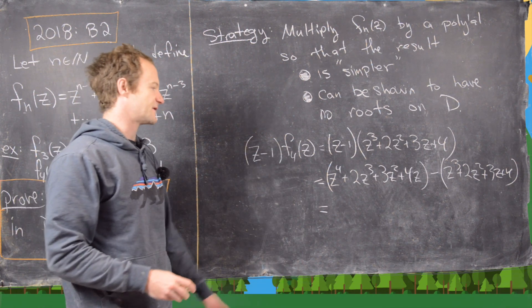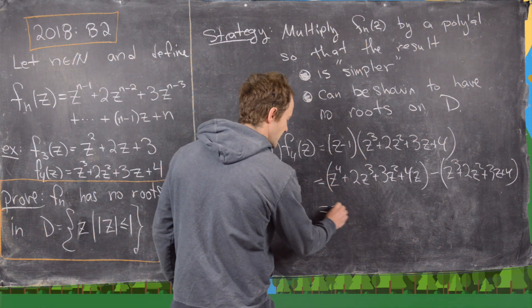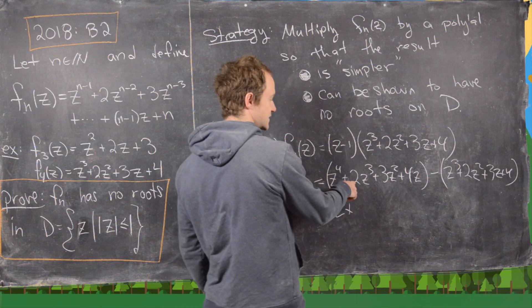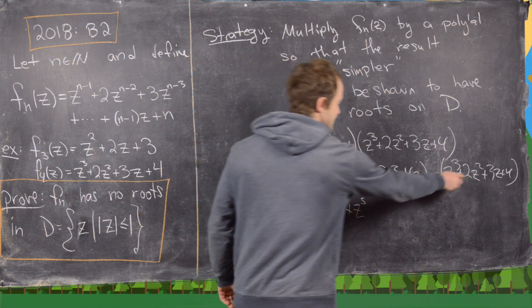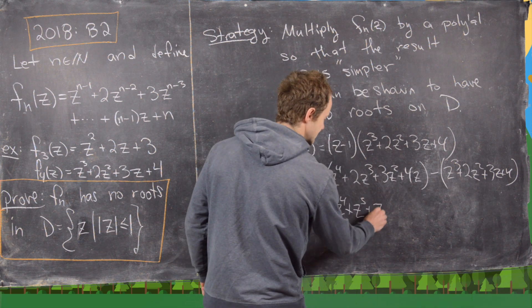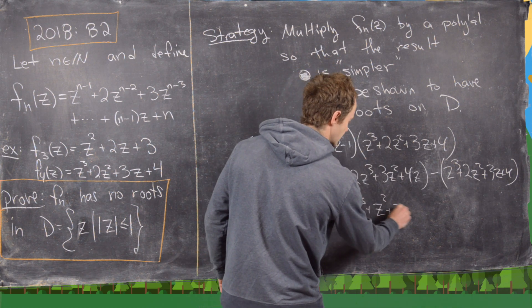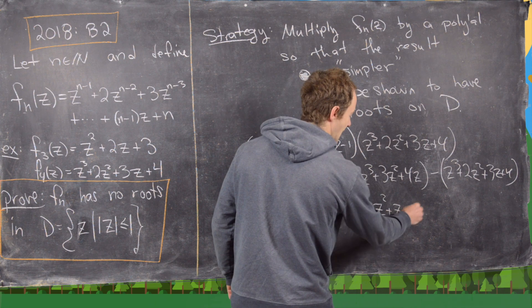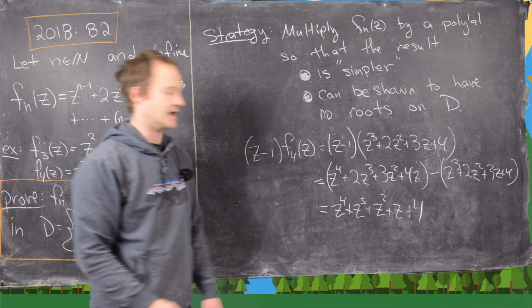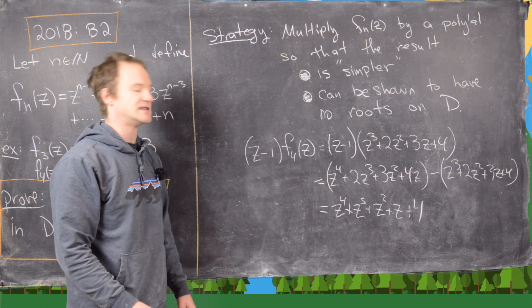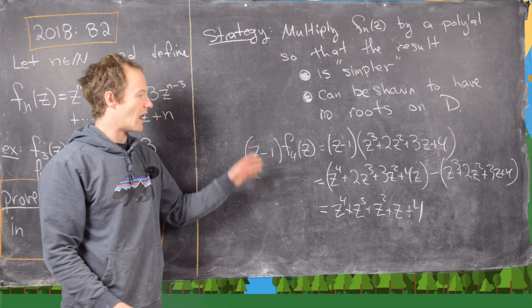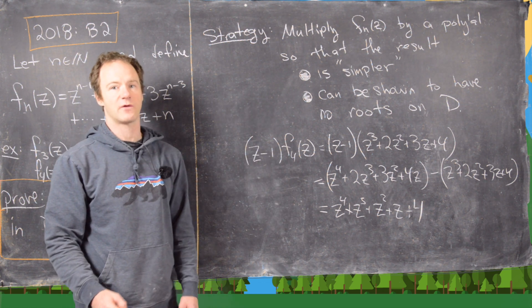But now notice a lot of this stuff simplifies, and that's going to leave us with z to the fourth plus z cubed plus z squared plus z minus 4 in the end. So this really gives us a good idea for what our trick should be. I'll clean up the board and then we'll start off with that trick.